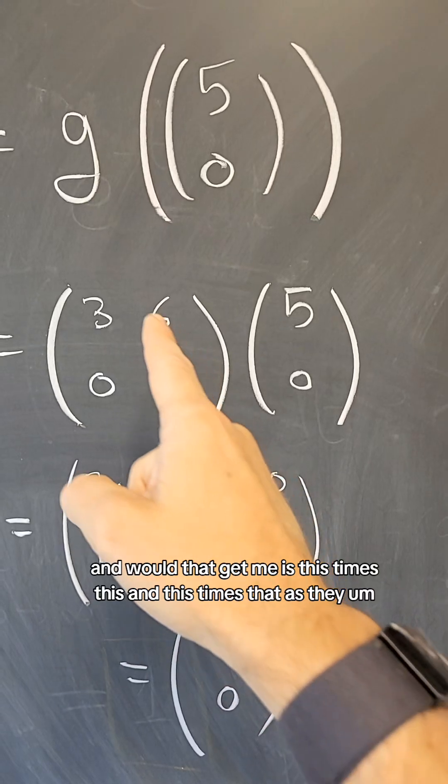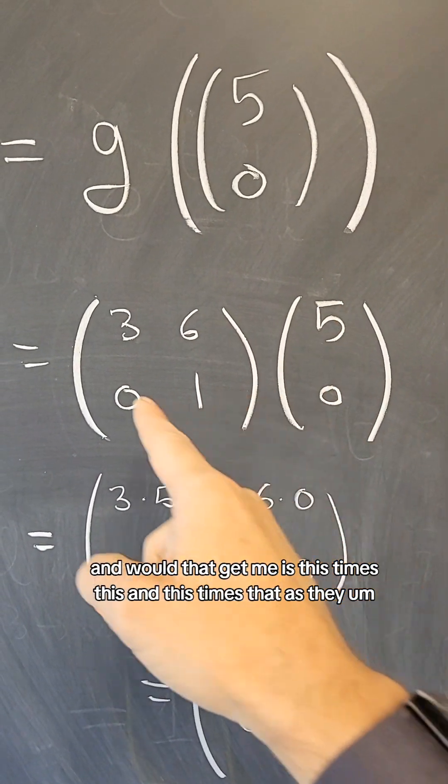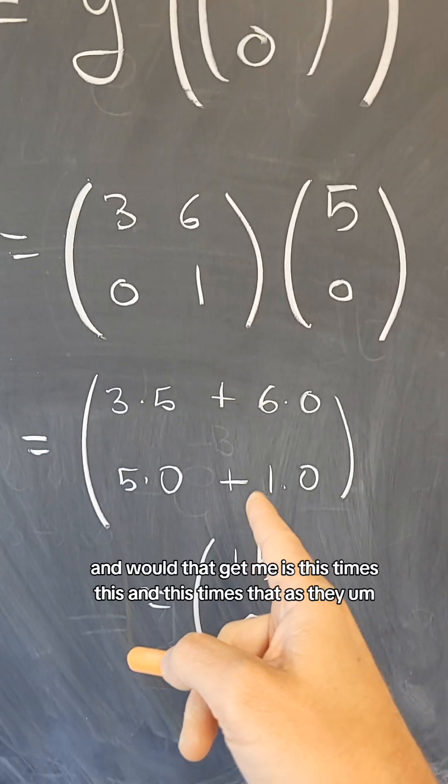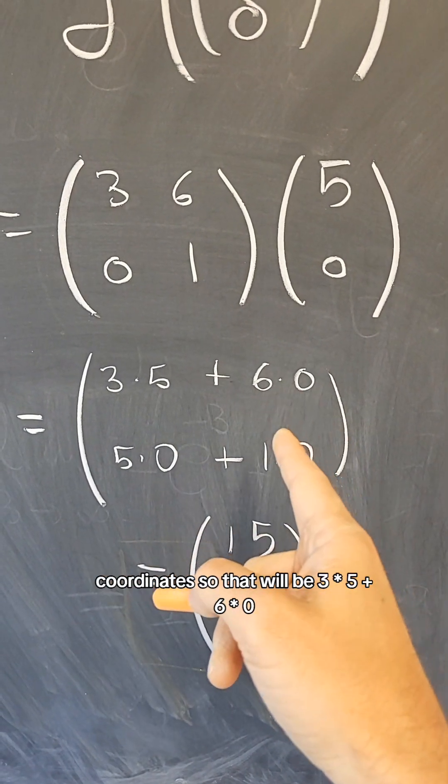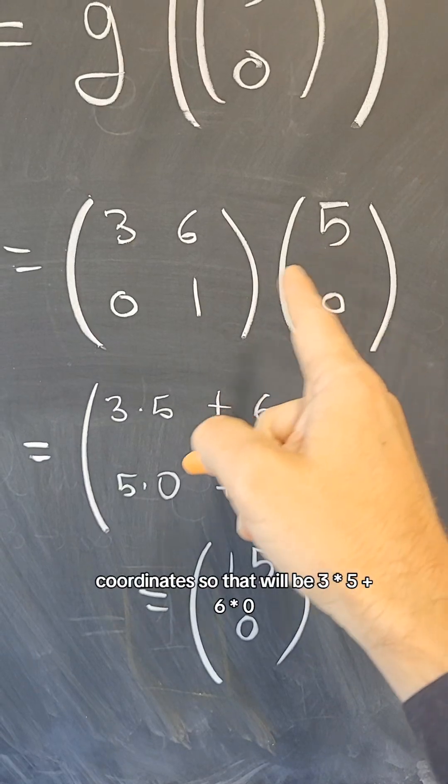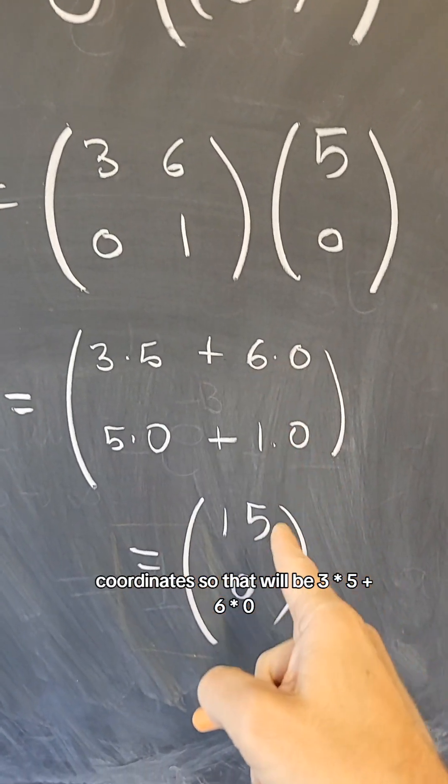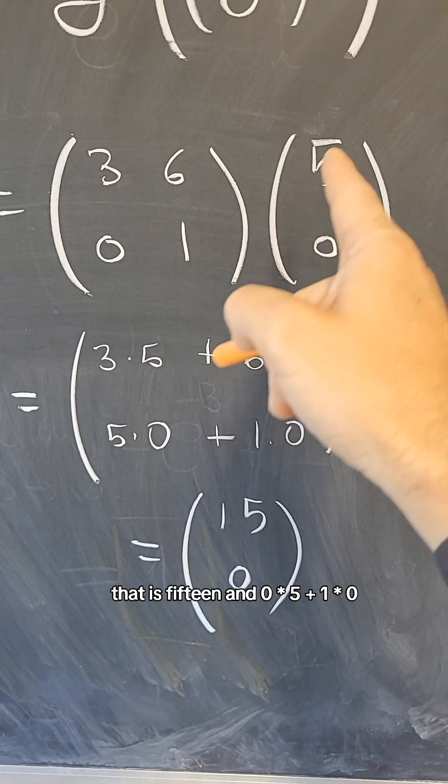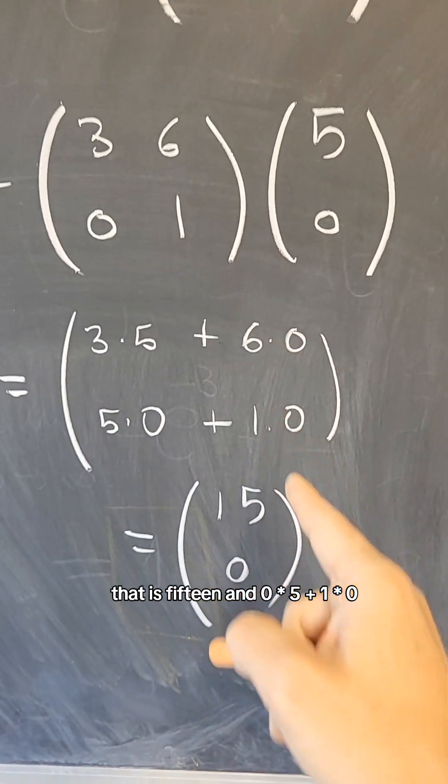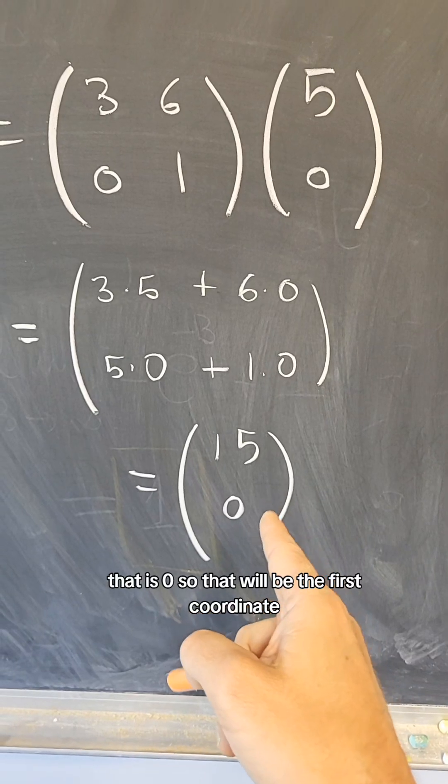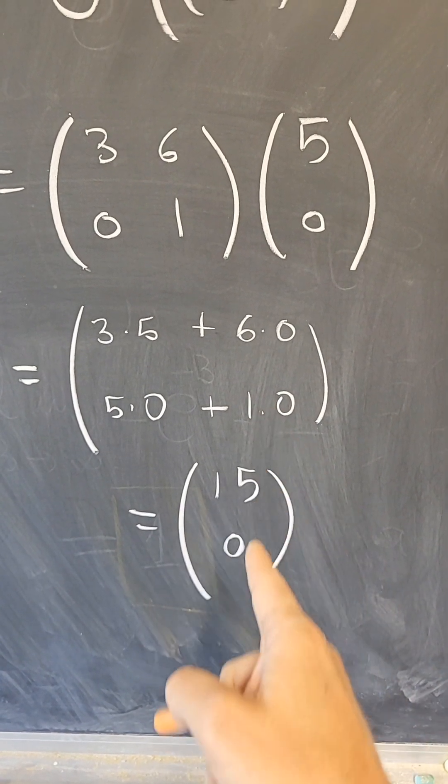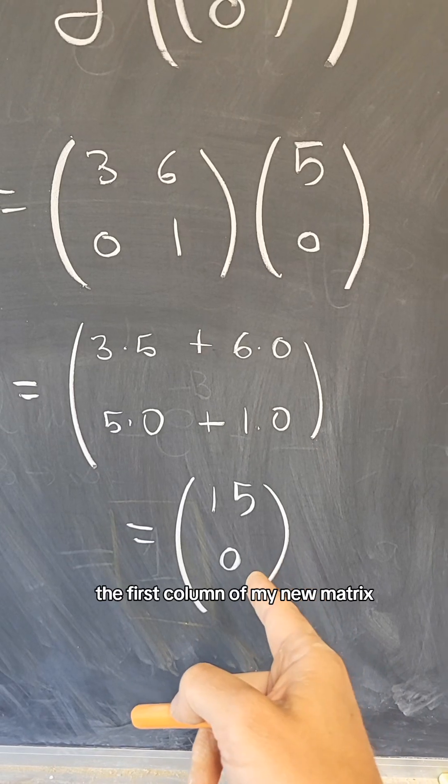And what that gets me is this times this, and this times that, as the coordinates. So that will be 3 times 5 plus 6 times 0, that is 15, and 0 times 5 plus 1 times 0, that is 0. So that will be the first coordinate, the first column of my new matrix.